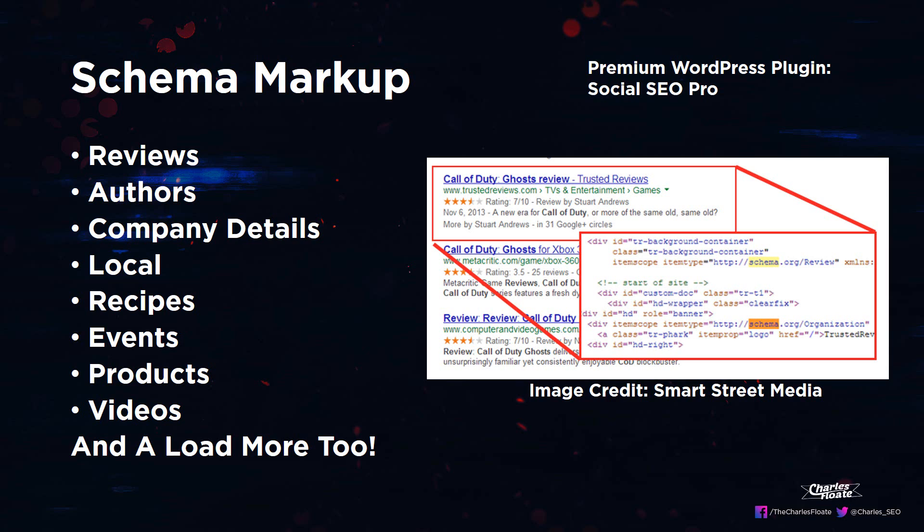If you want to actually use a plugin that allows you to do this, you can use a premium WordPress plugin such as Social SEO Pro if you're using a website that is international or national. If you want to go more local then I suggest using Project Supremacy by Herc Magnus — it's a really good plugin for local schema markup.